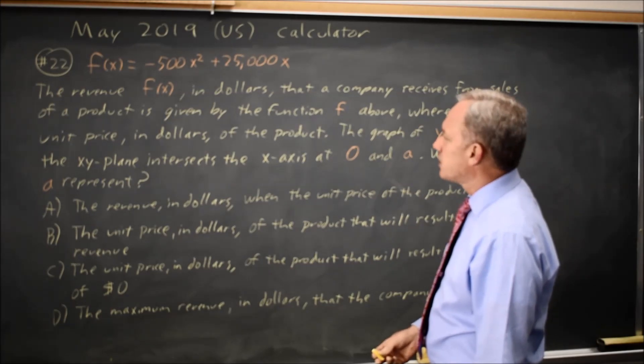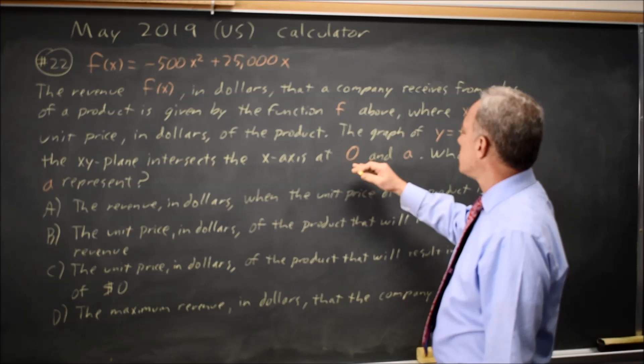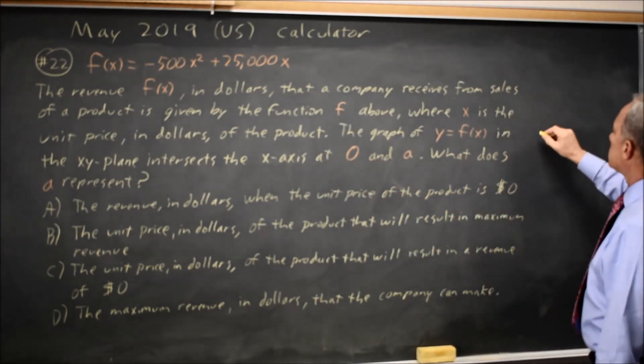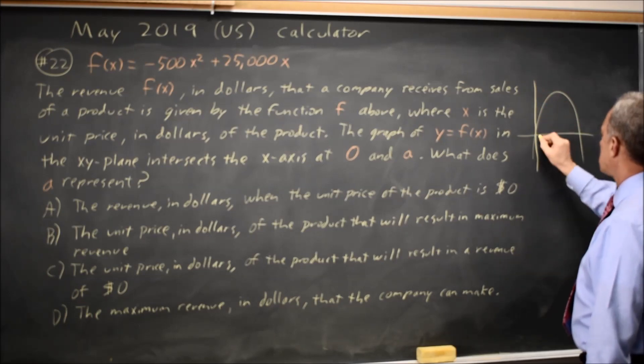And they tell you it has x intercepts, it intersects the x axis at 0 and A. The graph looks something like this.